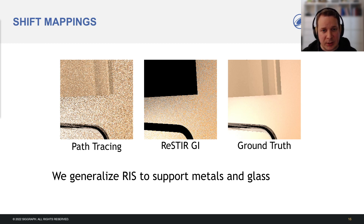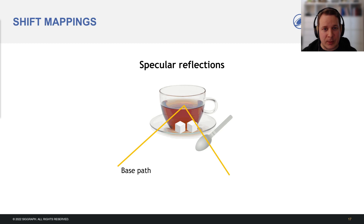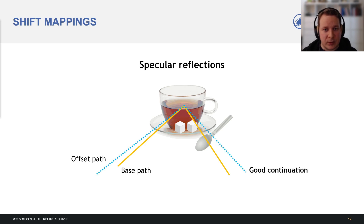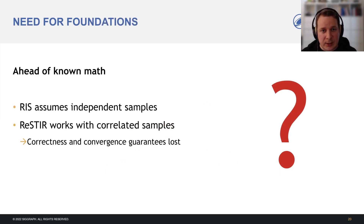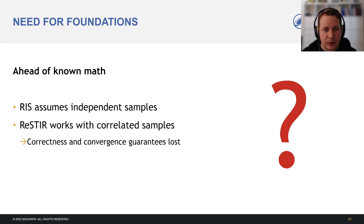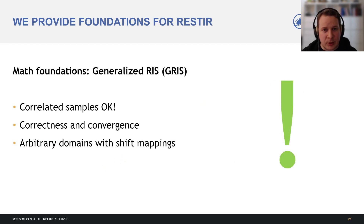This reuse of path vertices as they are is simple, but creates problems with specular interactions. Proper path reuse requires changing the path as we go. Here we have sampled the orange path with a specular reflection. The blue offset path approaches from a different direction. The only continuation follows the specular reflection. By reusing vertices, we get a direction that carries no energy. Performing the ideal reflection at resampling requires generalizing RIS. There are also other reasons for generalizing RIS. ReSTIR was not based on known mathematics. RIS assumes independent samples, but sample reuse correlates them.